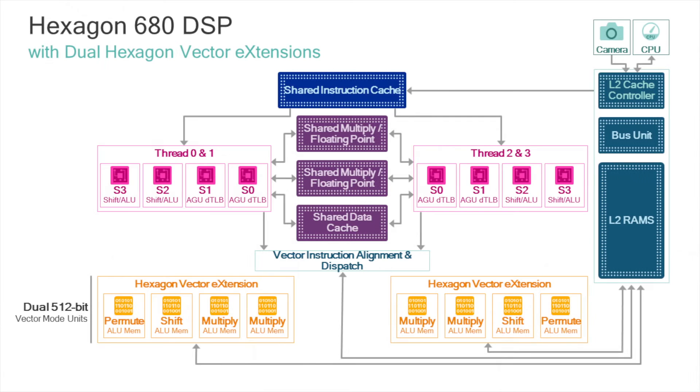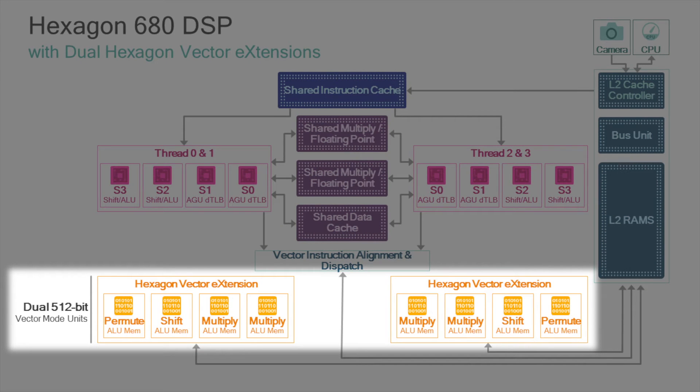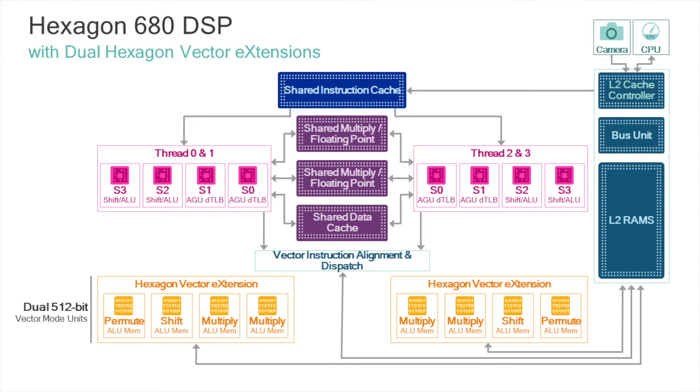Applications utilizing camera, video, computer vision, and virtual reality can take advantage of these benefits to create features and experiences that were not previously realizable using just the CPU. The real strength of HVX lies in the number of bits you can process in a single clock cycle. HVX has two 512-bit wide words that can be computed in parallel to process 1,024 bits in a single clock cycle. This compares very favorably to a CPU which computes only 32 bits per clock cycle, and using a coprocessor only up to 128 bits — so that's a great deal more processing power using the Hexagon SDK.